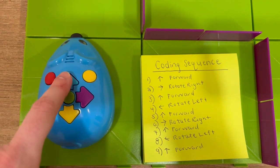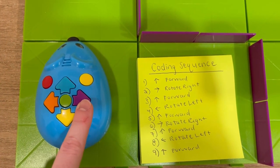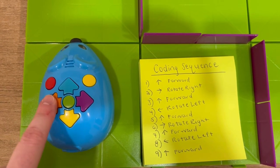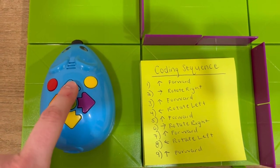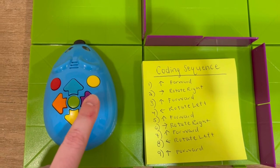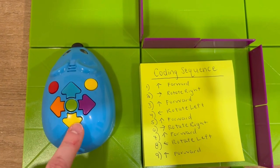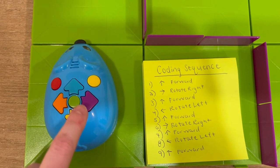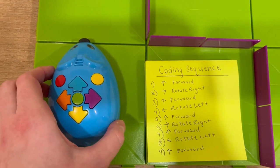So the coding sequence for this one is going to be forward, rotate right, forward, rotate left, forward, rotate right again, forward, rotate left again, and then forward lastly to make it to the cheese.